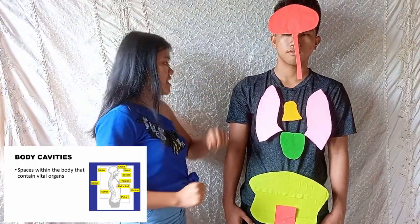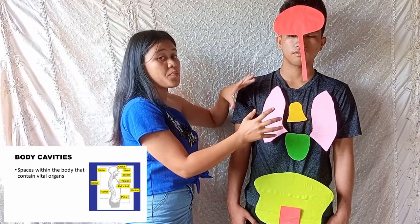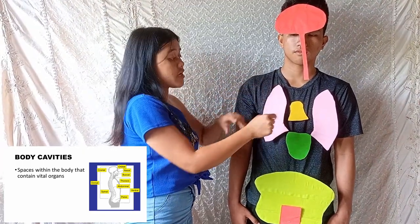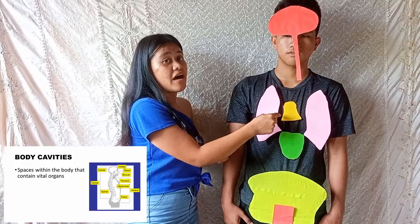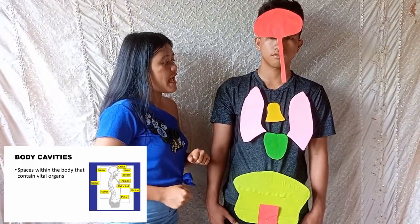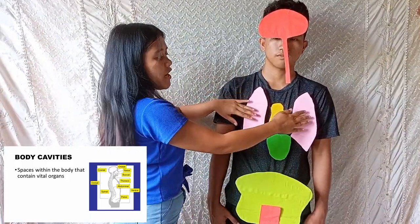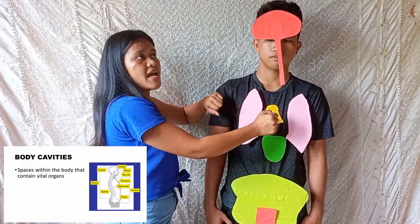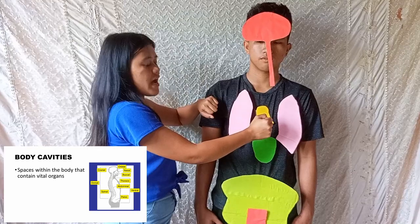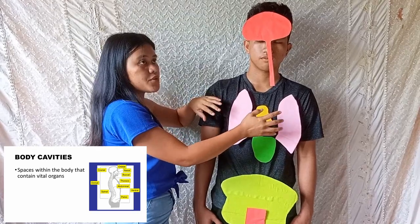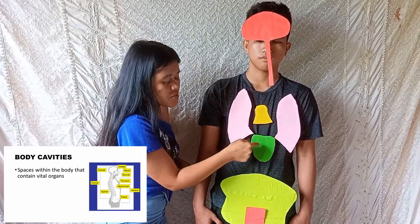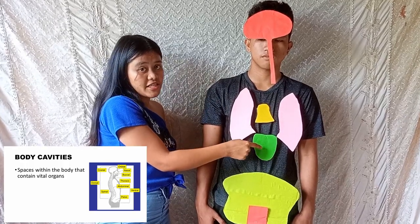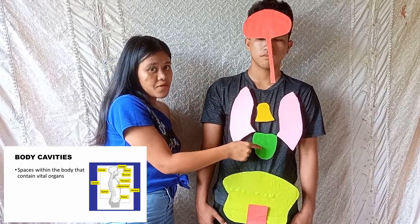Within the thoracic cavity, the superior region contains the mediastinum. We also have the two pleural cavities and the pericardial cavity, which is within the mediastinum.